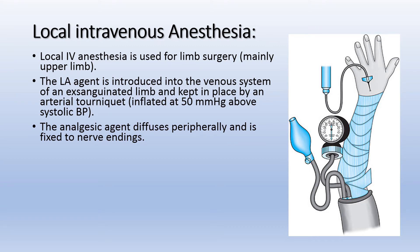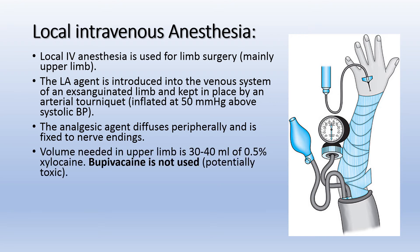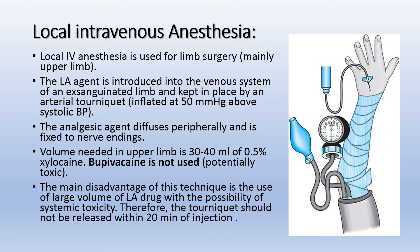The agent diffuses and is fixed to the nerve endings. The volume needed in the upper limb is 30 to 40 mL of 0.5% xylocaine. Bupivacaine is not used because of its toxicity. The main disadvantage of this technique is the use of a large volume of local anesthetic drug with the possibility of systemic toxicity. Therefore, the tourniquet should not be released within 20 minutes of injection.